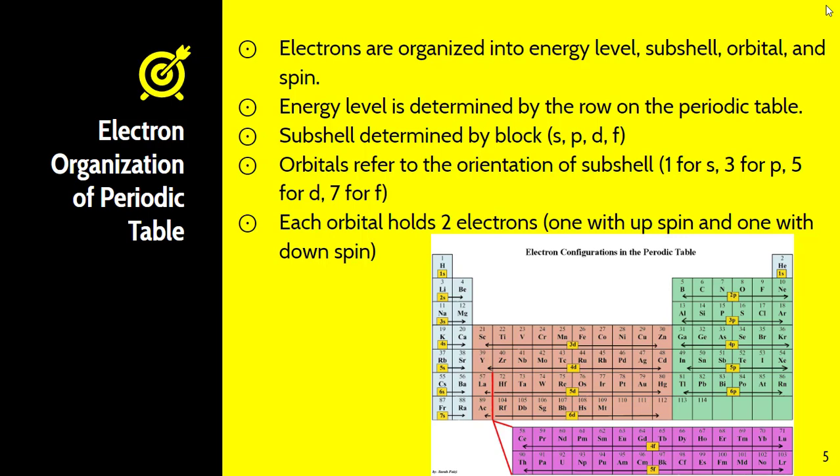It's easy to determine these numbers because each orbital holds two electrons. You just look at the width of the block on the periodic table. For example, the S block is only two columns wide, meaning each part of S can hold two electrons — since each orbital holds two electrons, there's only one orientation. Same with P: you have six elements wide, so P block can hold a maximum of six electrons, giving three orbitals for that. Then five for D and seven for F.